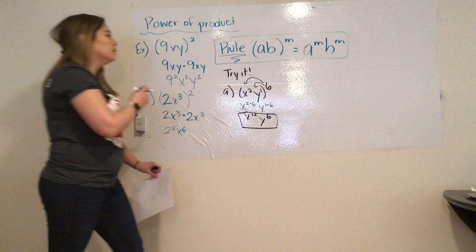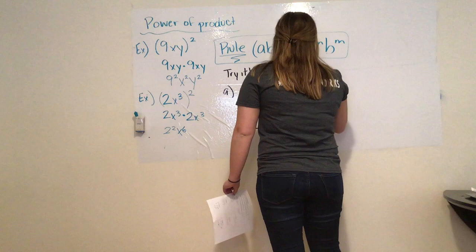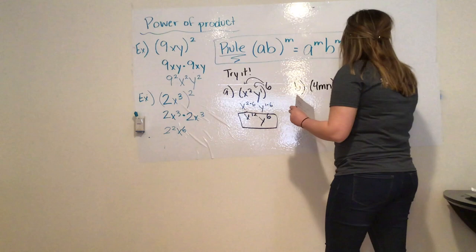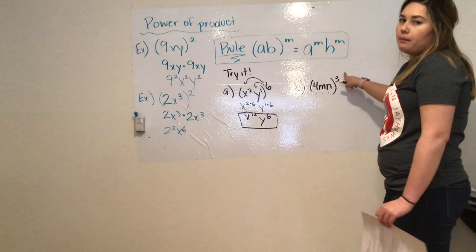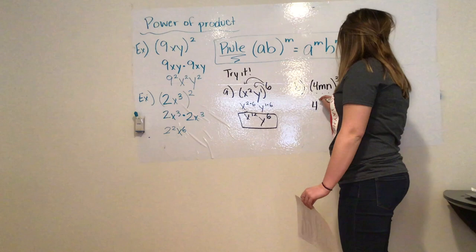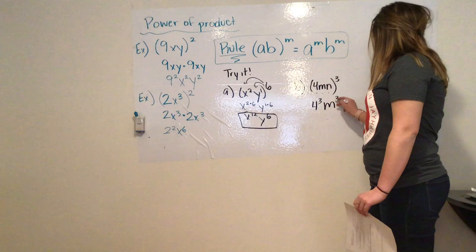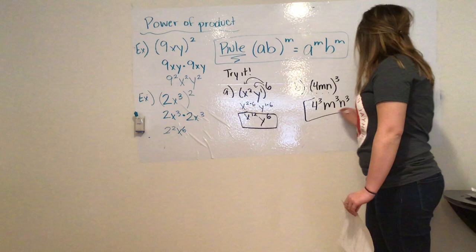All right, moving on to B. We have 4mn, all raised, again, to the power of 3. Again, each base in this parentheses is being multiplied by a power of 3. So, 4 being multiplied 3 times, so that's why I have the power of 3. M is also to the power of 3. And n is to the power of 3.